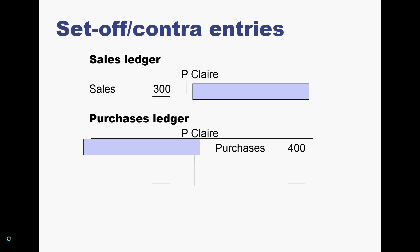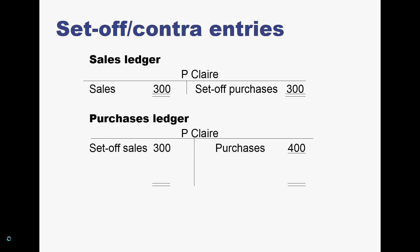This is the offsetting. The rule for setting off contra entries — this mainly relates to OCR — is we use the lower value. The lower value is £300, so £300 is going to be credited to P.Claire's account in the sales ledger, which closes off P.Claire's account there. We credit £300 to P.Claire's account in the sales ledger, and therefore the corresponding debit entry goes in the purchase ledger in P.Claire's account. Note the details: set off purchases and set off sales — that's a contra of £300.